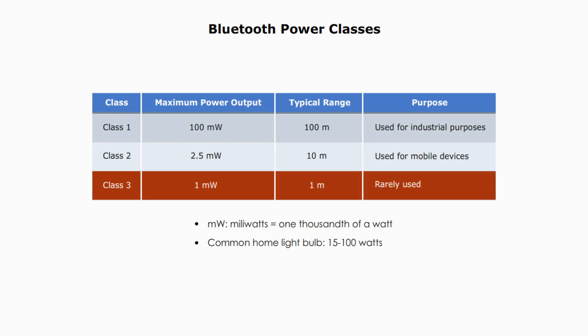Class 3 is even lower in power output. The range is about 1 meter, or about 3.3 feet, and is rarely used.